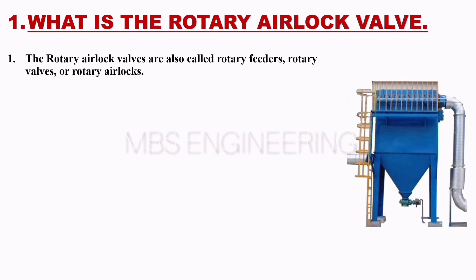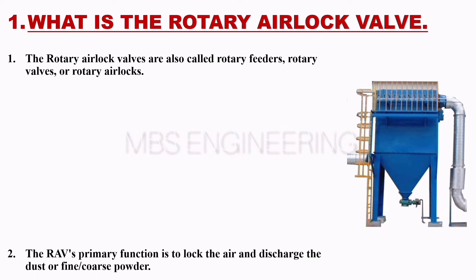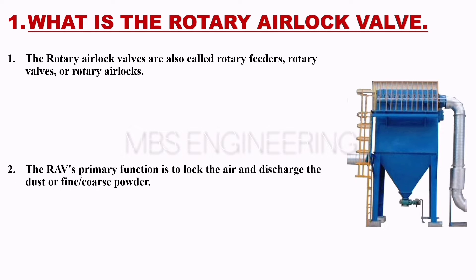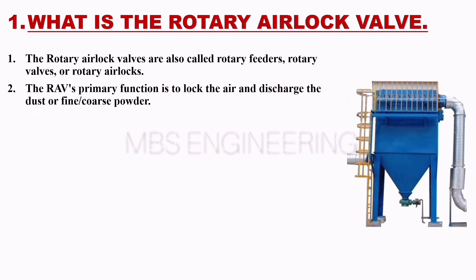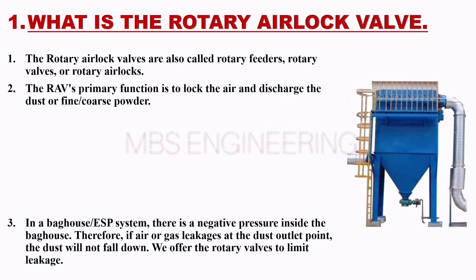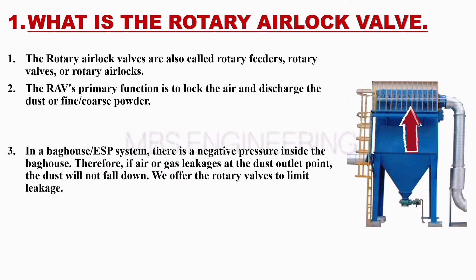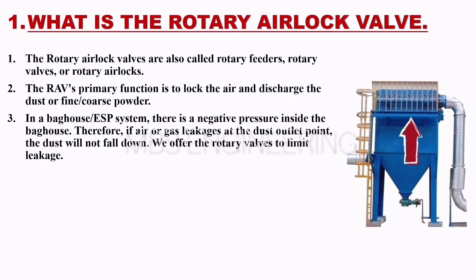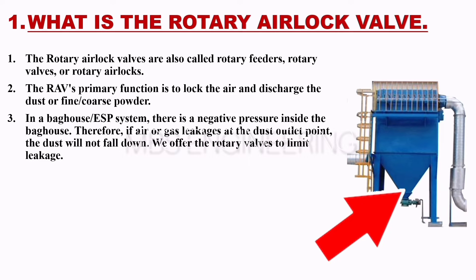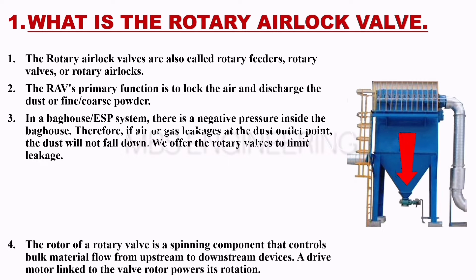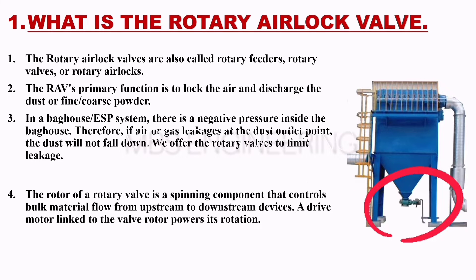Rotary airlock valves are also called rotary feeders, rotary valves, or rotary airlocks. The RAV's primary function is to lock the air and discharge dust — fine or coarse powder. In a bag house or ESP system, there is negative pressure inside. Therefore, if air or gas leaks at the dust outlet point, the dust will not fall down. Rotary valves are used to limit this leakage.